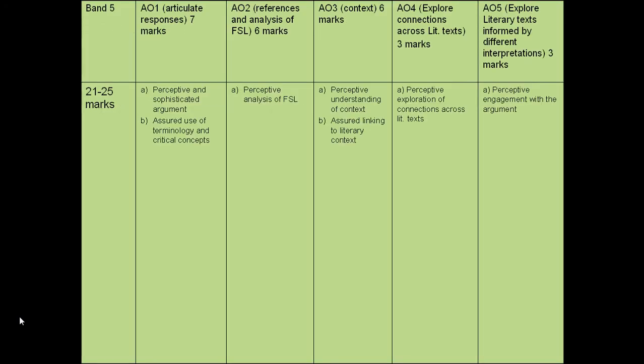Let's look at the mark scheme. This question is out of 25, and the marks are fairly evenly split across your assessment objectives. To achieve full marks for AO1 — your ability to write a developed response — you need to make sure the ideas you are using are perceptive and sophisticated, not too simplistic. Secondly, make sure you use terminology in a sophisticated way across your piece.